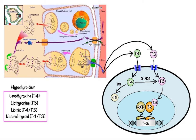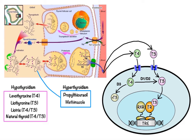Moving on to the second group, which includes agents used to treat hyperthyroidism, the condition in which there is overproduction of thyroid hormones. Medications include propylthiouracil and methimazole, which work by inhibiting thyroid peroxidase required for oxidation of iodide, as well as inhibiting coupling of iodotyrosines in thyroglobulin necessary for thyroid hormone synthesis. In addition, propylthiouracil also inhibits deiodinase 1, which prevents conversion of T4 to T3.